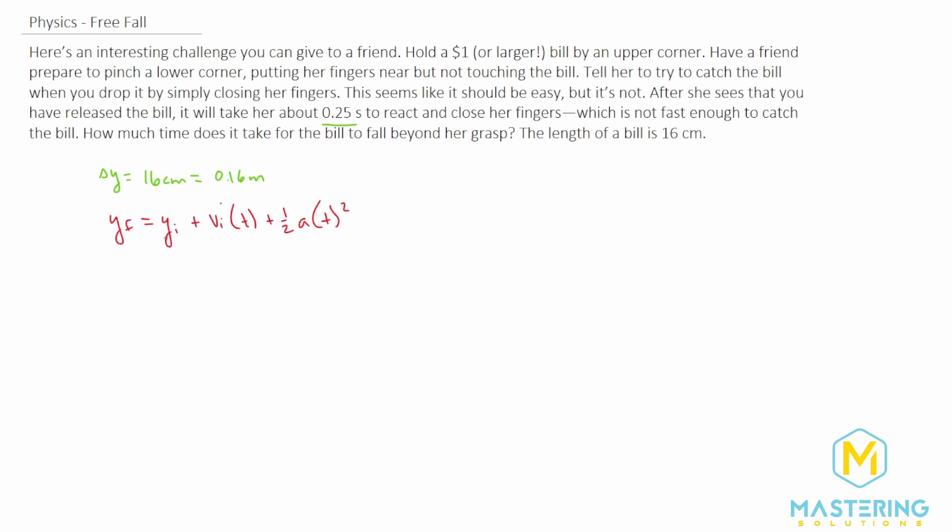The initial y is 0. We set the problem so at the top where we drop it is 0, and it's falling in the negative y direction. So y final will be negative and y initial is 0. The initial velocity is also 0 because we're dropping it from rest. So now we have y final equals one half times acceleration times time squared.